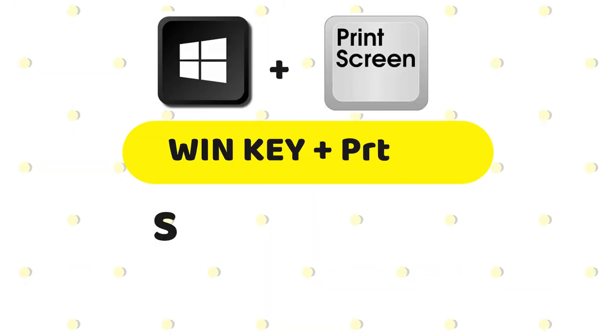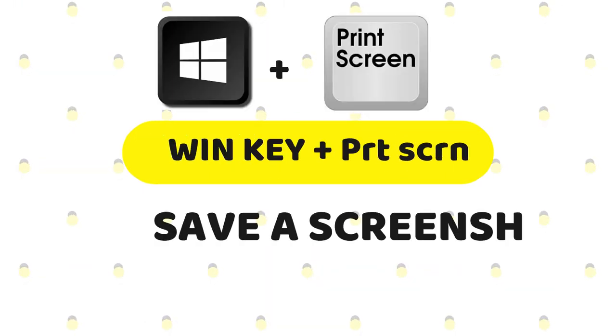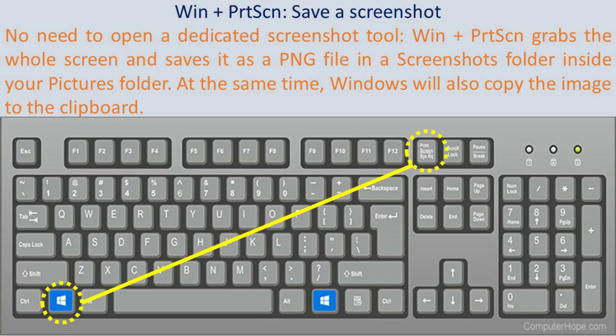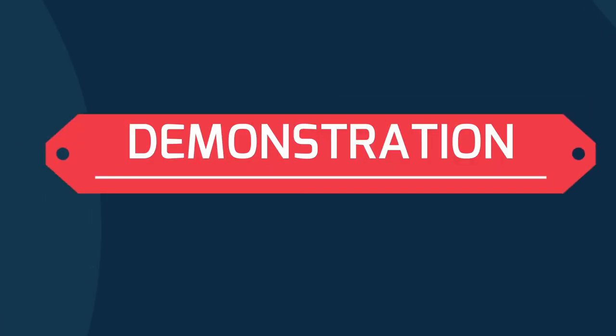Win plus Print Screen — save a screenshot. No need to open a dedicated screenshot tool. Win plus Print Screen grabs the whole screen and saves it as a PNG file in a screenshots folder inside your pictures folder. At the same time, Windows will also copy the image to the clipboard.